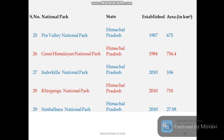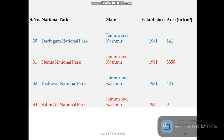Himachal Pradesh has five national parks. Among them, Great Himalayan National Park is popular and is a UNESCO World Heritage Site. The other national parks are Pin Valley, Indarkilla, Khirganga, and Simbalbara. Jammu and Kashmir has four national parks: Hemis, Dachigam, Kishtwar, and Salim Ali National Park. Hemis National Park is the most popular, known for its snow leopard.